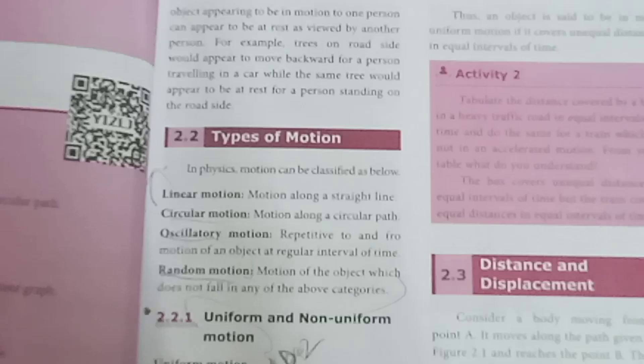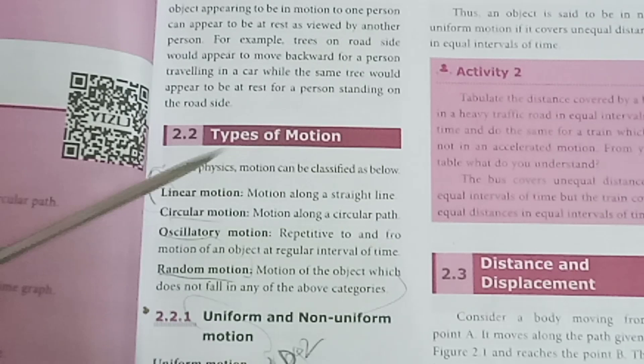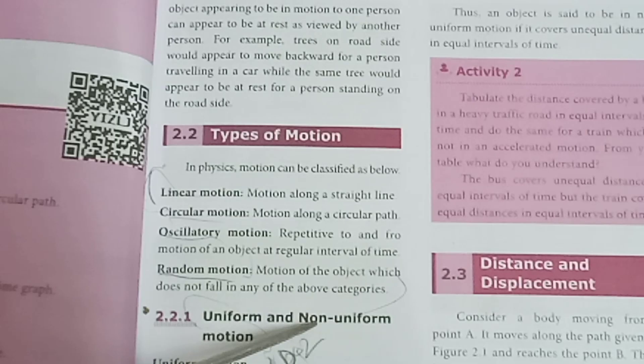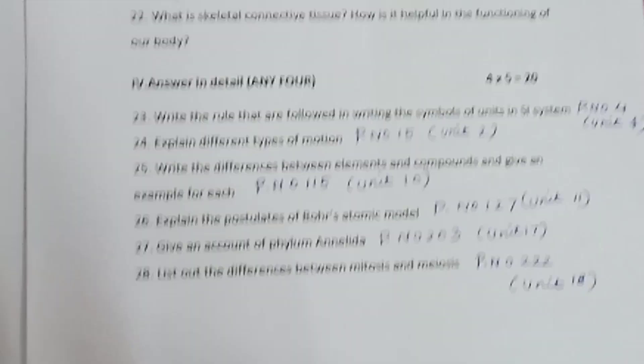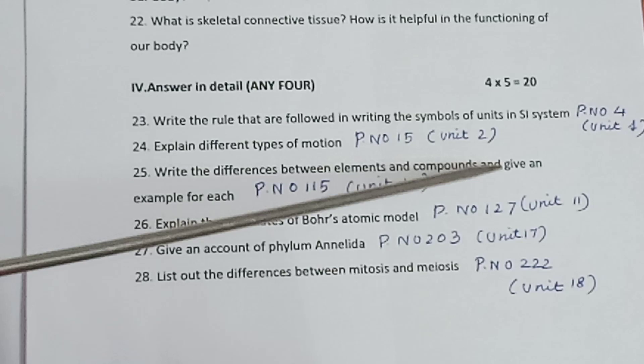Question 24: Explain different types of motion. Page number 15, Unit 2. In physics, motions can be classified as below: Linear motion, circular motion, oscillatory motion, random motion. These are the four types.